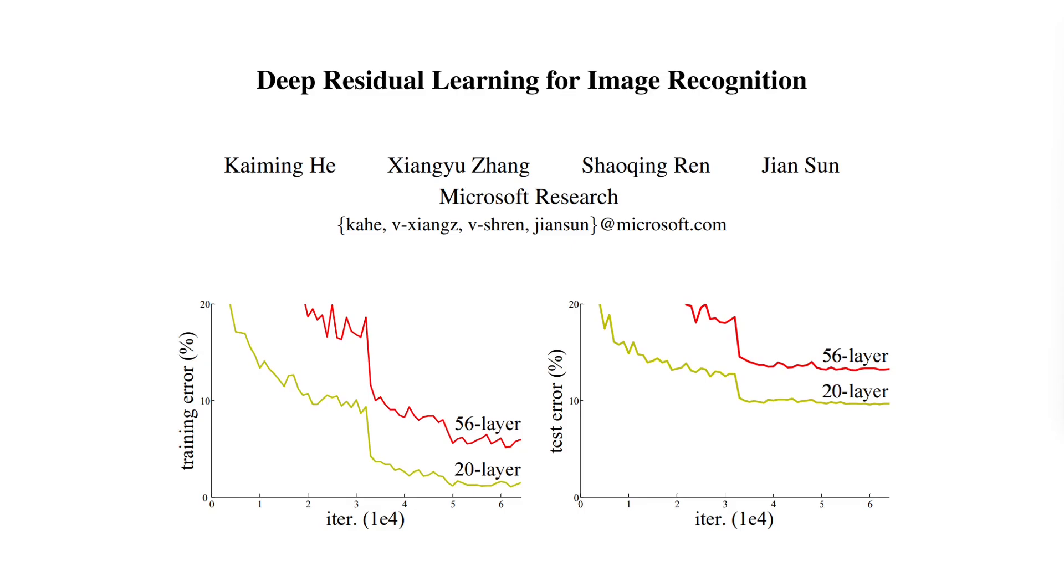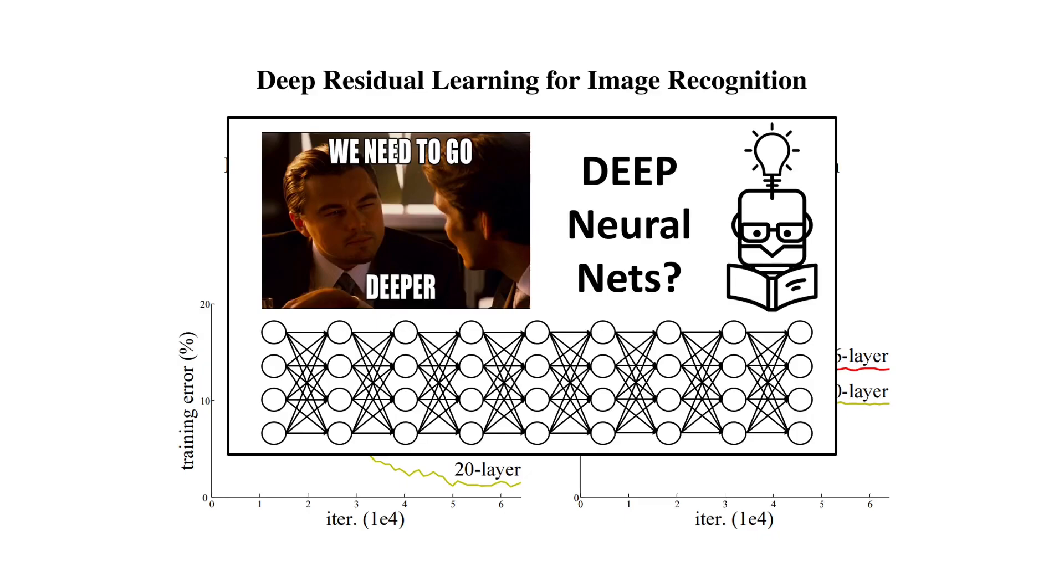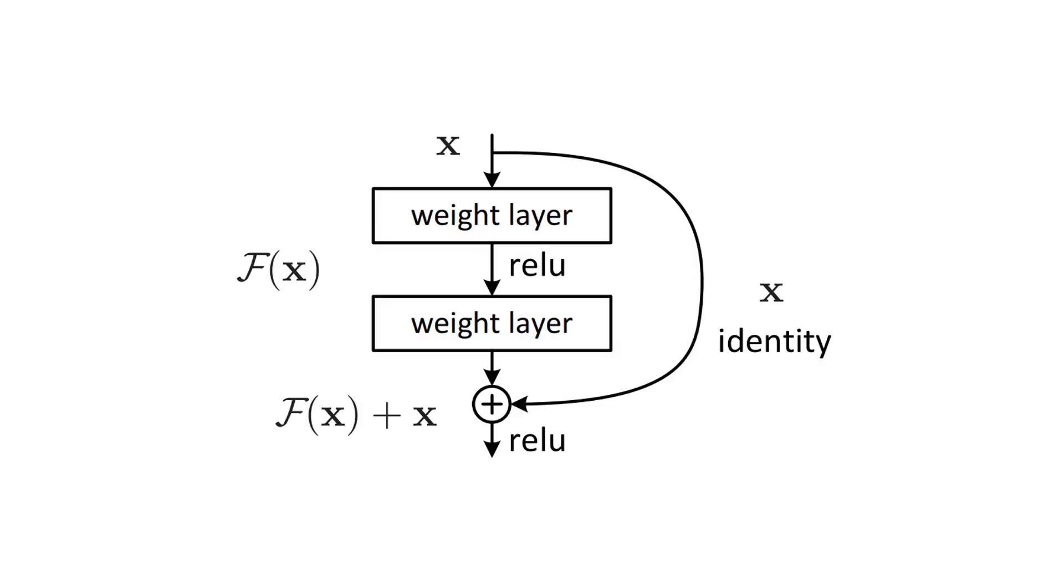Also, if you want to know more about why depth is important in neural nets, I've made a video that goes into more details about this subject. The link to it is in the description. And now let's see how we can solve this depth problem by looking at the residual block as introduced in the ResNet paper.